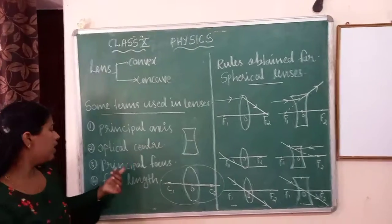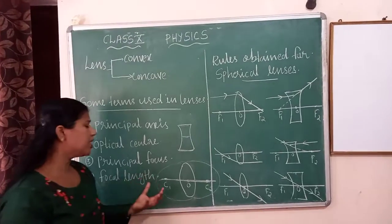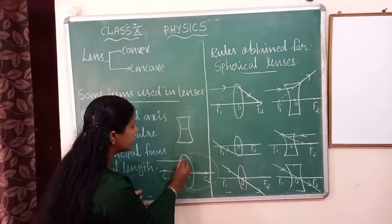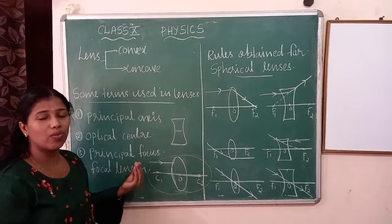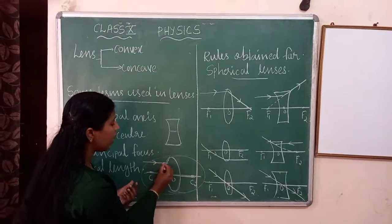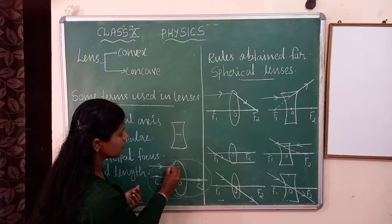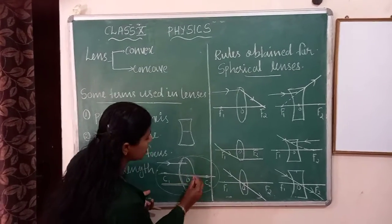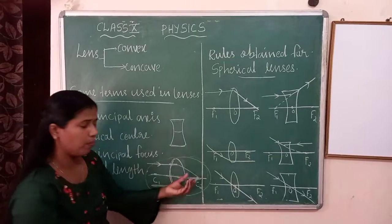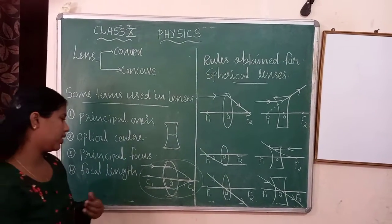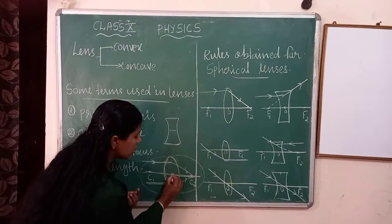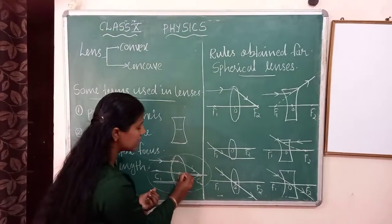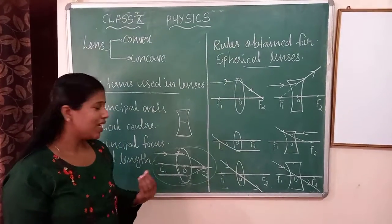Next is principal focus. In case of a convex lens, a ray of light parallel to the principal axis, after refraction, is focused on one point — that is the principal focus. In case of a concave lens, the ray parallel to the principal axis appears to meet at one point after refraction — that is the principal focus of the concave lens. The distance between the optical center and the focus is called the focal length.